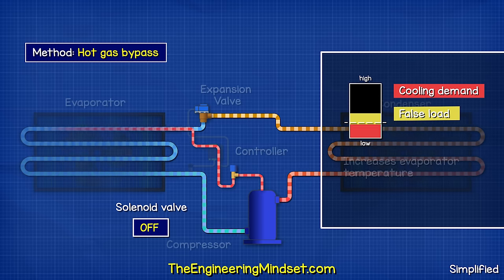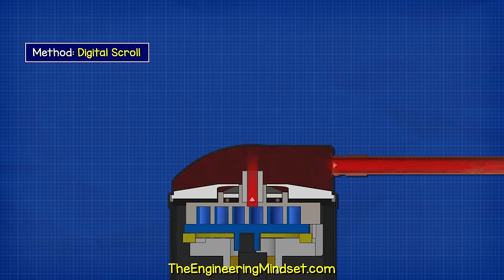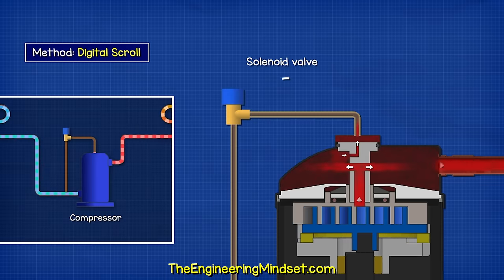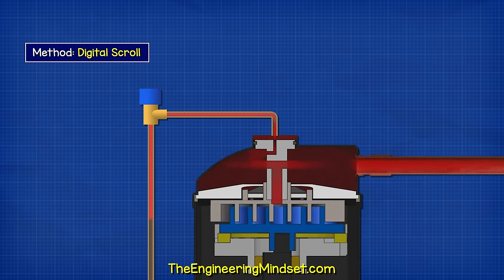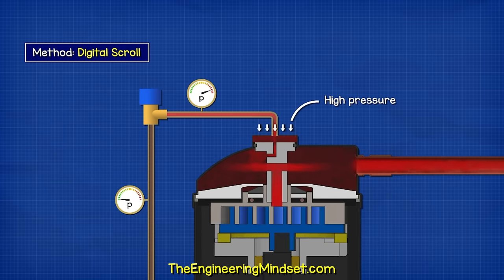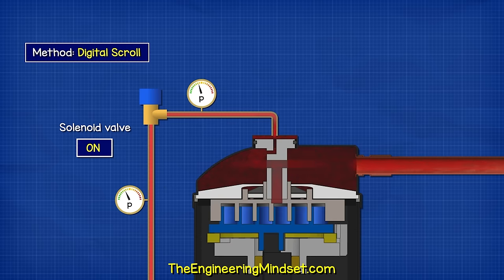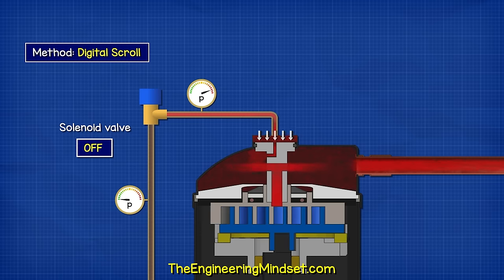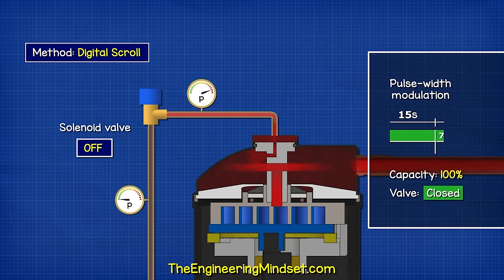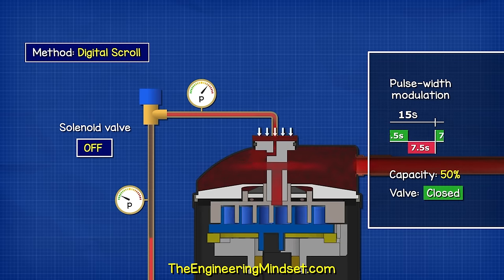Another common design is the digital compressor. A solenoid valve recirculates refrigerant back into the suction line. The fixed scroll can move up and down. The pressure within the dome holds the fixed scroll down but a solenoid valve can open to release this pressure back into the suction line. During this moment, the scrolls will disengage a tiny amount and so no refrigerant will be compressed in this time but the motor keeps running. After a short duration, the valve then closes, the pressure builds up again, and this pressure will force the scroll down and so the compression continues. We control this in 15 second intervals. So, if you need 50% capacity, then the scroll will engage for 7.5 seconds and then disengage for 7.5 seconds.